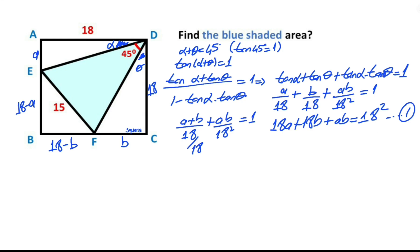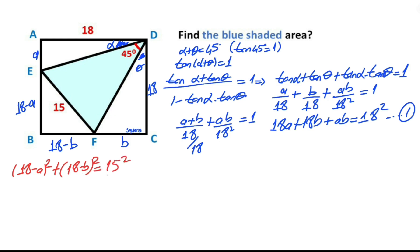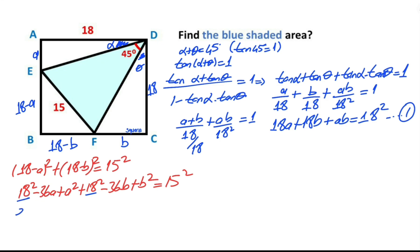For this triangle, applying the Pythagorean theorem: (18 minus a)² plus (18 minus b)² equals 15 squared. Expanding: 18² minus 36a plus a² plus 18² minus 36b plus b² equals 15 squared. That gives us 2 times 18² minus 36a minus 36b plus a² plus b² equals 15 squared.